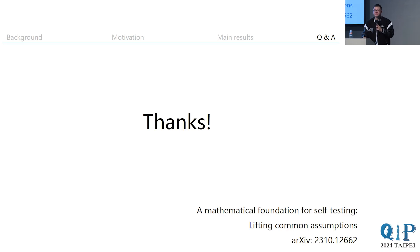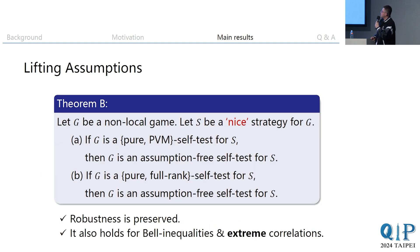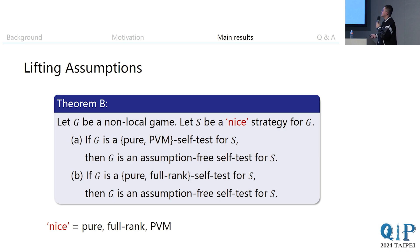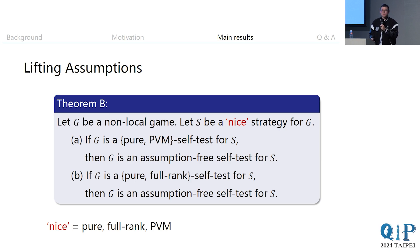Q: What's the definition of 'nice'? A: 'Nice' means the strategy S is pure, full-rank, and PVM — it has all the good properties we want, which fits basically most existing self-testing results. Q: What if we only assume purity without the other conditions? A: In that case it is automatically stronger because making only the purity assumption, without the PVM one, is fewer assumptions than part A, so part A applies as well.